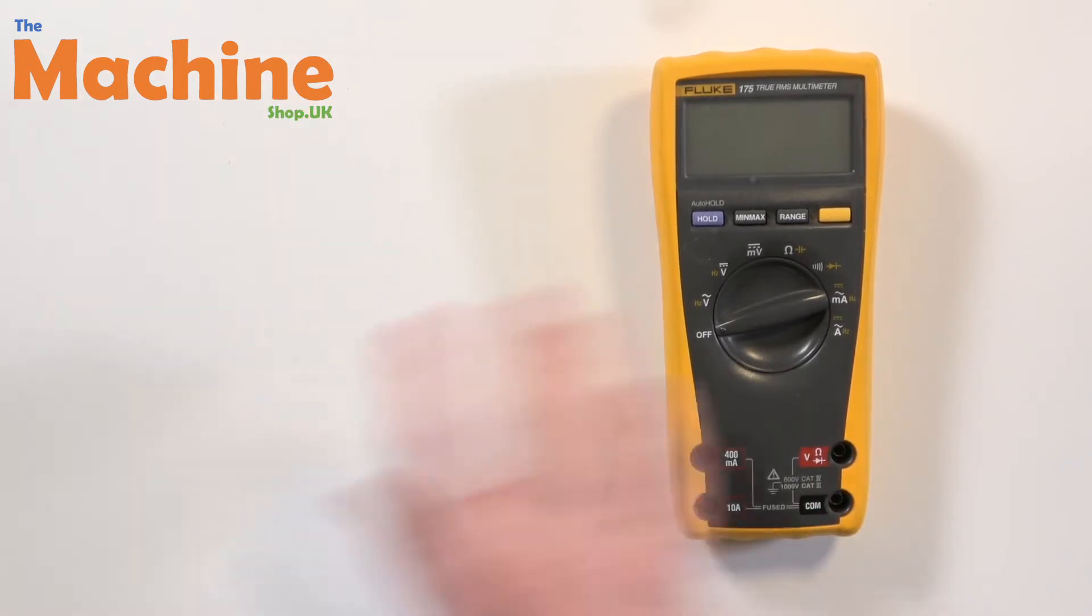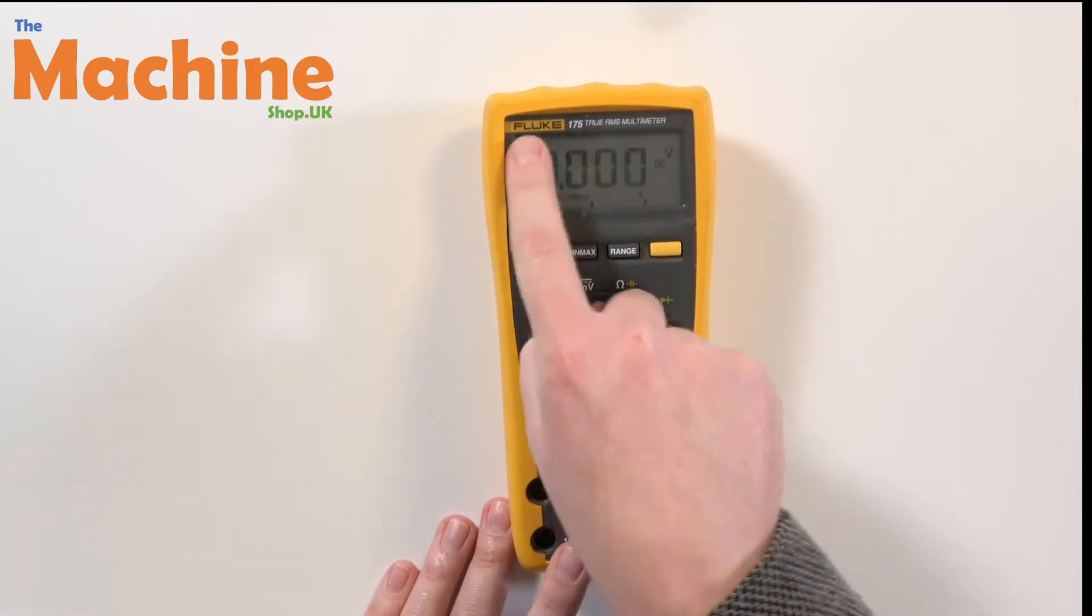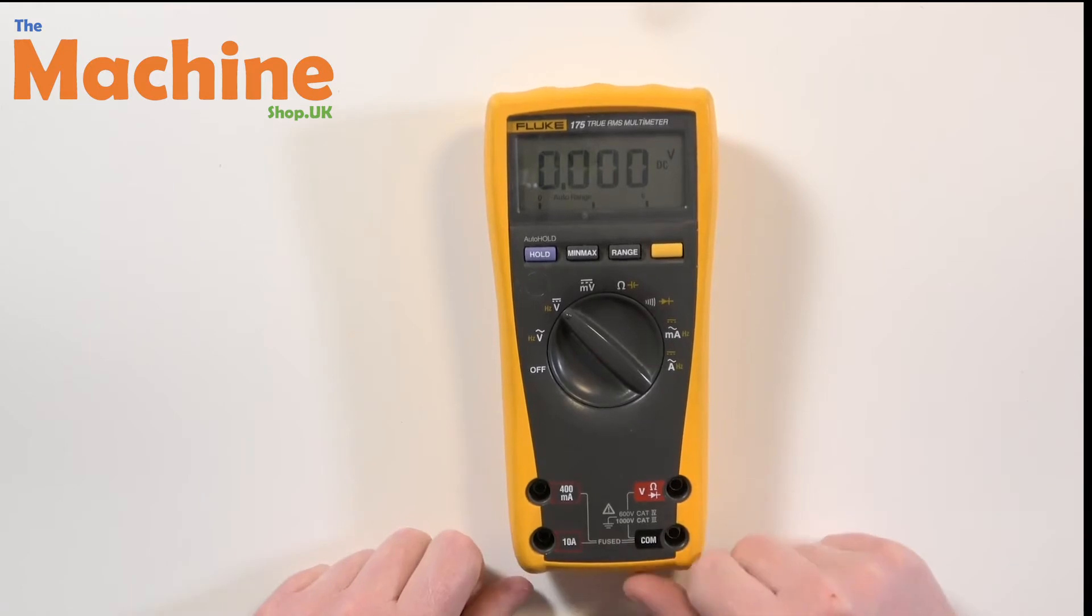Let's have a look at this DMM in a bit more detail. So as we can see if I turn it on, this is the Fluke 175. I'll leave a link in the description if you want to buy one of these specifically.